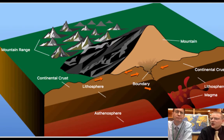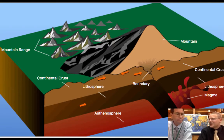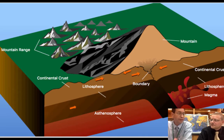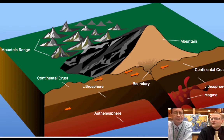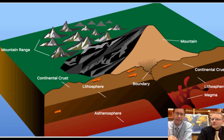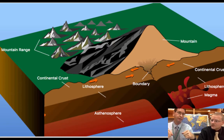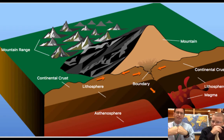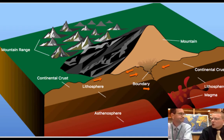...you could have really just two continents running into each other that have the same density. And what happens there? Well, then you just end up with a mountain. The Himalaya Mountains are a really good example, where India — which is continental crust — and China — which is continental crust — are coming together and basically creating a mountain. Nowhere to go but up.